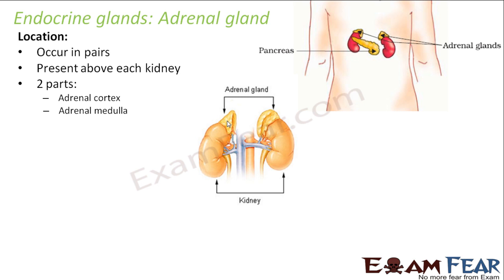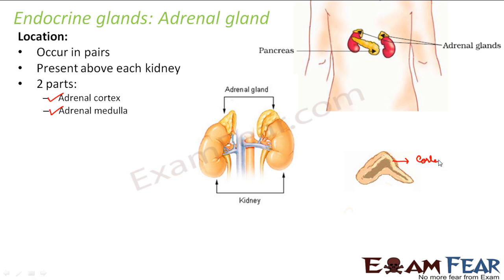They are divided into two parts: the adrenal cortex and adrenal medulla. Looking at the adrenal gland more closely, it is made up of two parts. The outer part — which looks like a folded structure — is the adrenal cortex. Inside, there is a dark colored structure, which is the adrenal medulla. These are the two parts of the adrenal gland.